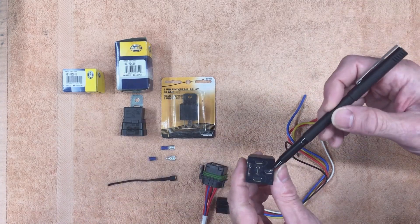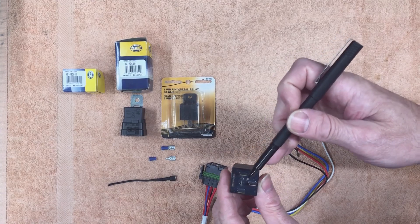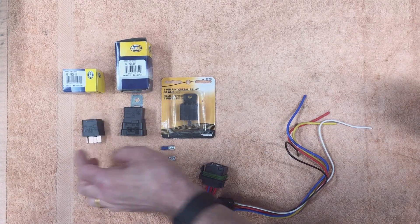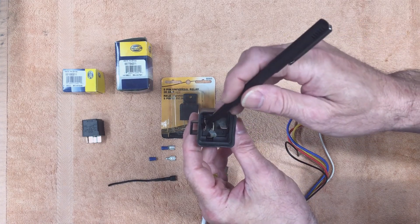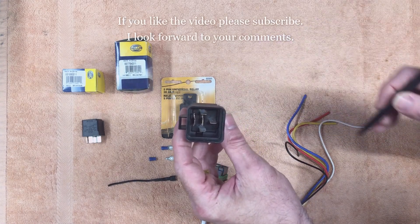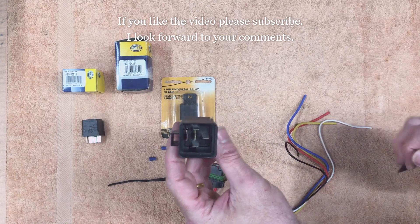So again, the common, normally open and normally closed, and both of these relays look the same on the inside. So the common, normally open and normally closed, and then the activation circuit on the outside.